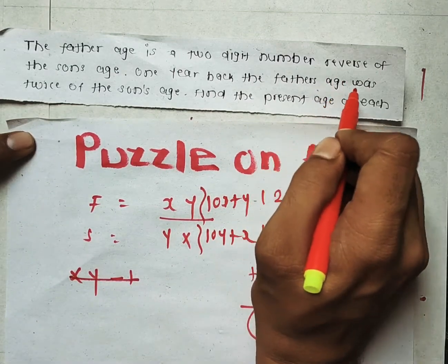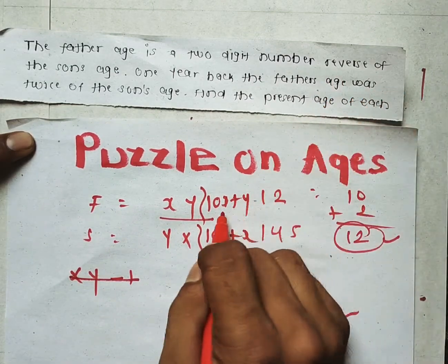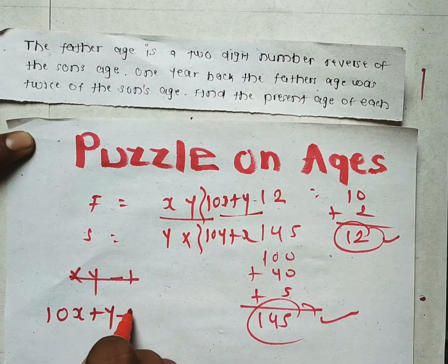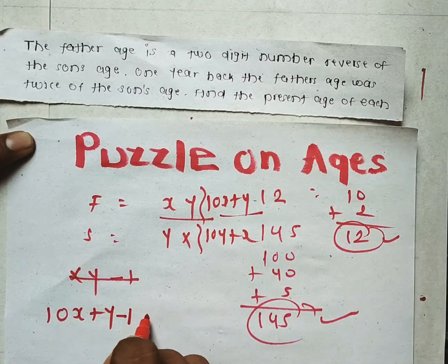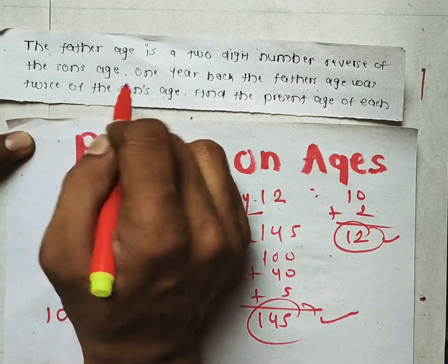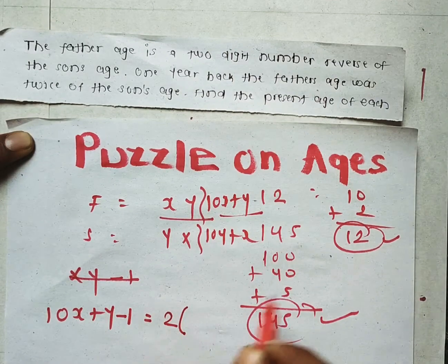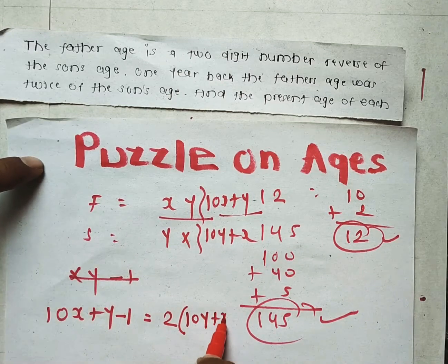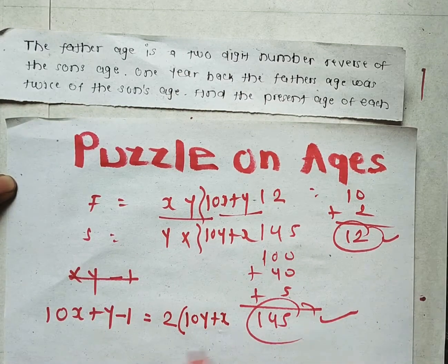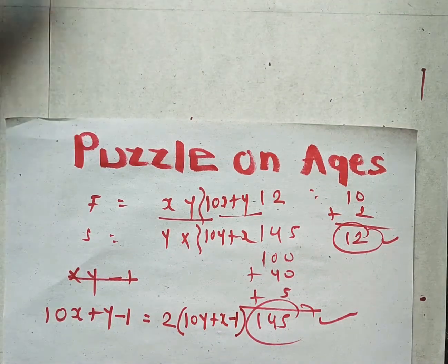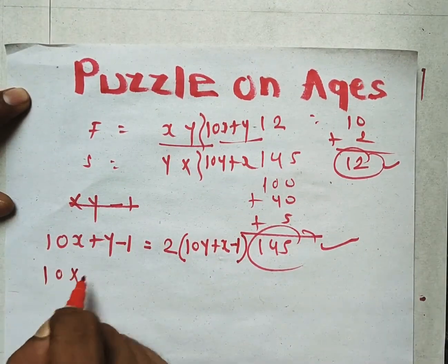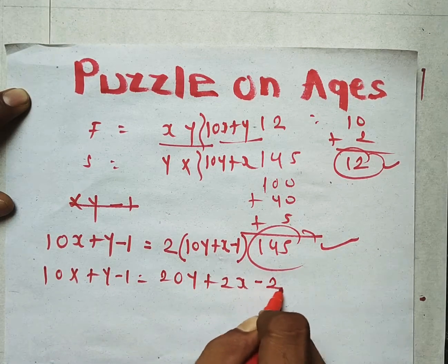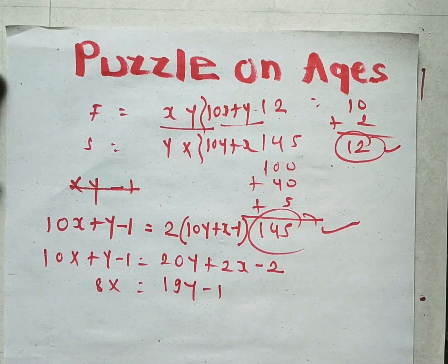One year back, the father's age was twice the son's age. The father's age right now is 10x plus y, so one year back it is 10x plus y minus 1. This equals twice the son's age. The son right now is 10y plus x, so one year back the son would be 10y plus x minus 1.